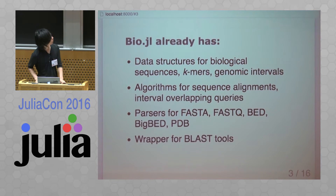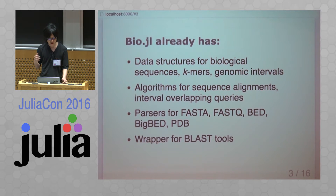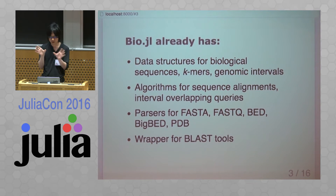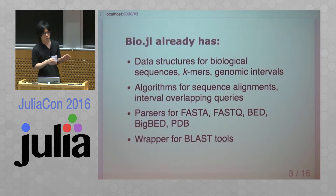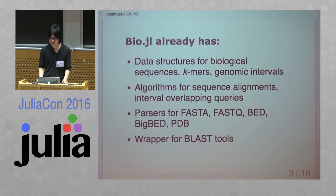BioJulia already has several things, like data structures for biological sequences, k-mers, and genomic intervals, and algorithms for sequence alignment and interval overlapping queries, and parsers for FASTA, FASTQ, BED, BigBED, and PDB, and wrappers for BLAST tools.